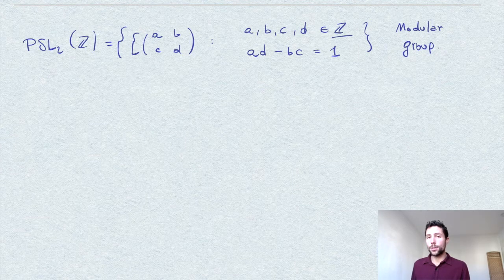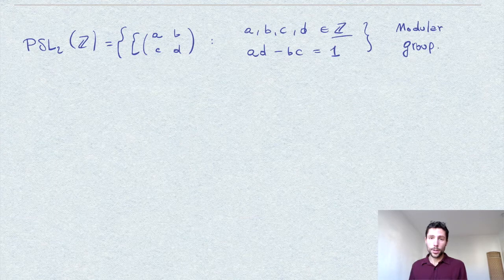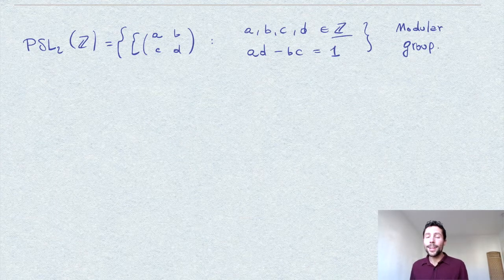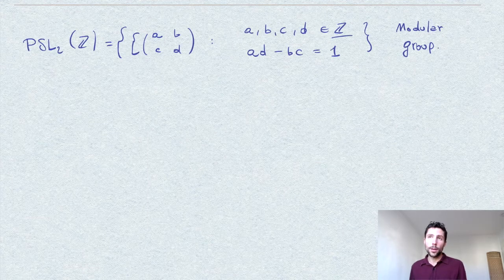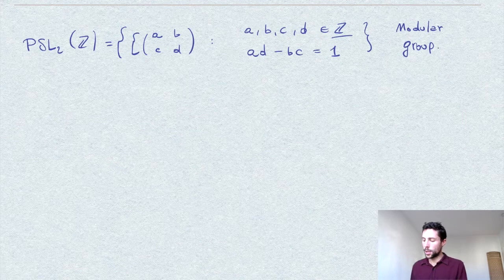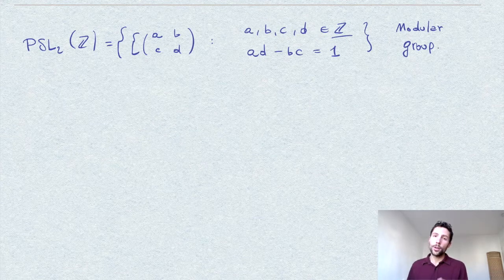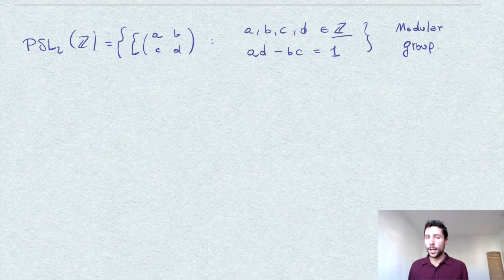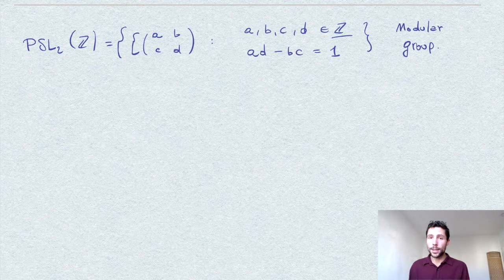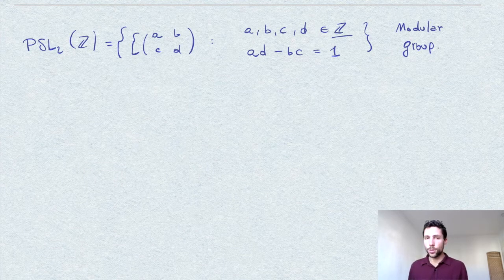Under this correspondence, the multiplication of two matrices corresponds to the composition of two functions in our set F. This would be enough to show that F automatically inherits the structure of a group from this PSL₂.